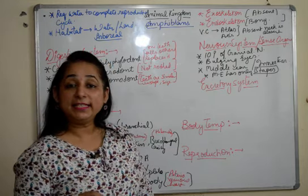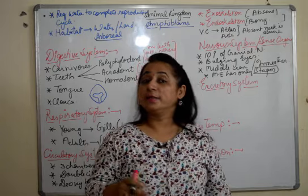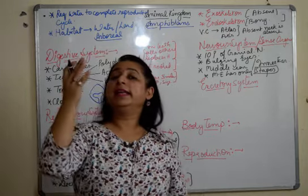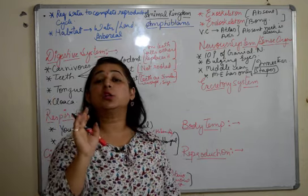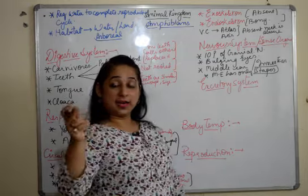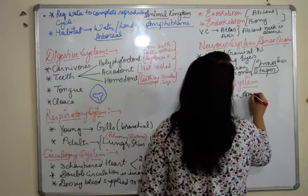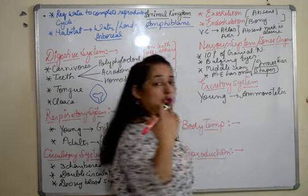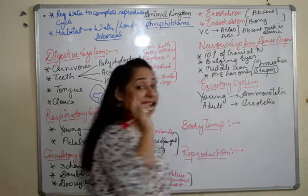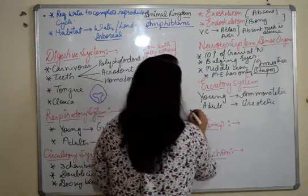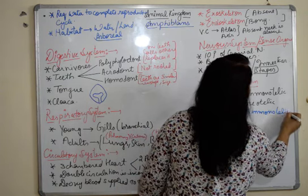Coming to the excretory system — there are three types of nitrogenous waste: ammonotelic, ureotelic, and uricotelic. Ammonium is most toxic and requires a lot of water for excretion. Since young ones survive in water, they are ammonotelic — they have abundant water to easily excrete ammonia. Adults are ureotelic. But there is an exception — the salamander is ammonotelic, which is an exception.